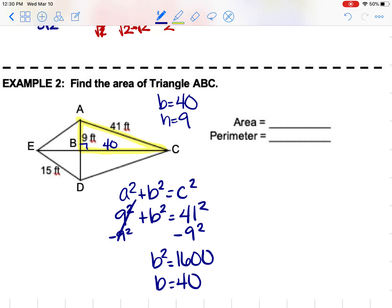So now we have all three sides, so we can find the perimeter. So we can say 9 plus the 40 plus the 41, which gives us 90. We're working with feet. Area, we would say base times height divided by 2. Plug that into your calculator, and you would get 180.